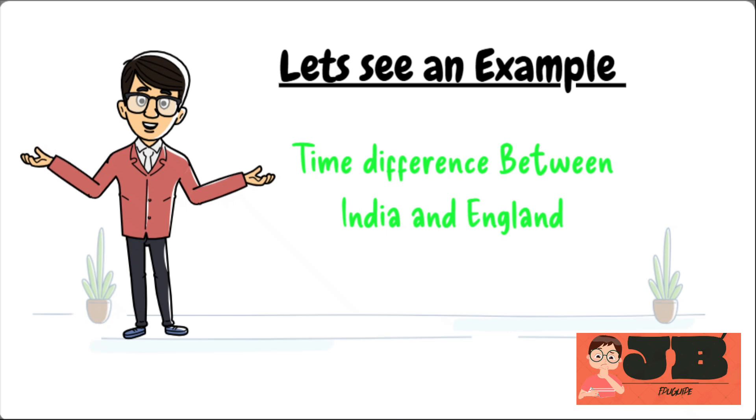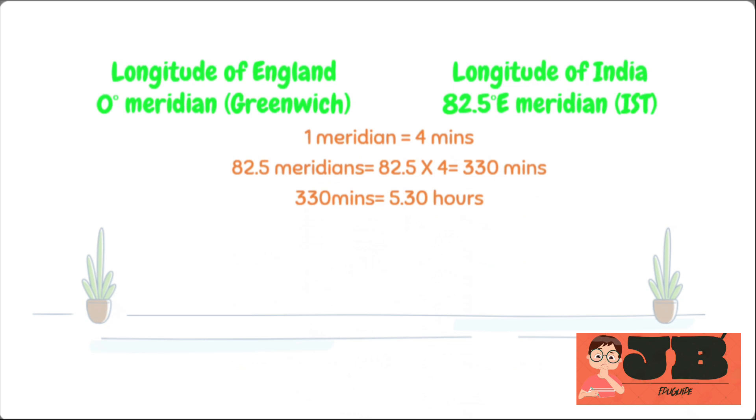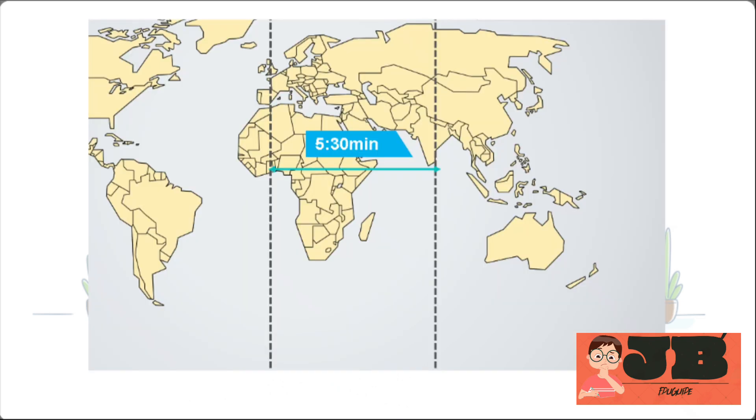For example there is 12 noon in England. Then what will be the time in India? Let's understand. The longitude of England, zero degrees meridians, and the meridians of India is 82.5 degrees east longitude. It means the Indian time is 82.5 degrees meridians ahead of England. We know the distance between one longitude to another is four minutes. So 82.5 degrees east meridians means 82.5 times 4 equals 330 minutes, which means about 5.30 hours ahead of England. If the time in England is 12 noon, then the time in India would be 5.30 pm.